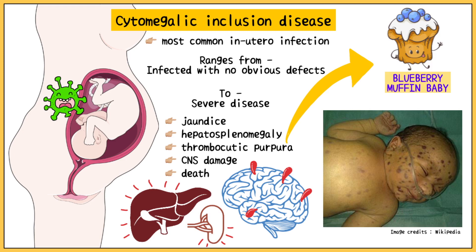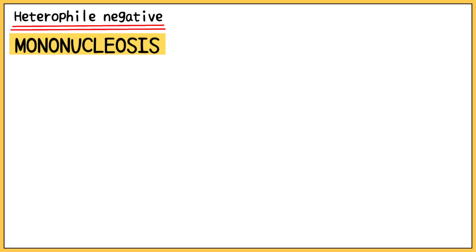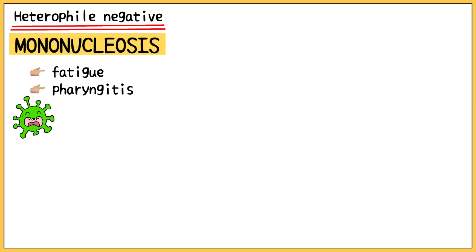CMV also causes mononucleosis. It is very important to remember that it causes a heterophile-negative form of mononucleosis. Heterophile antibodies are antibodies induced by external antigens, which are not present in this form of the disease. It causes fatigue and pharyngitis, which could be symptoms of almost any disease.